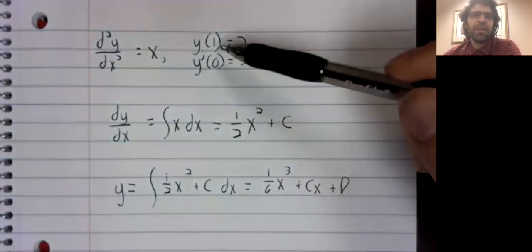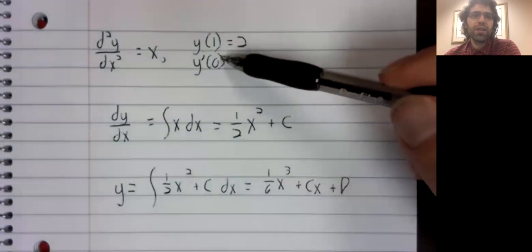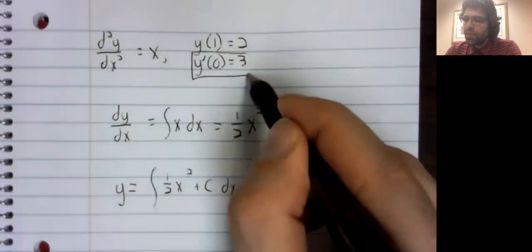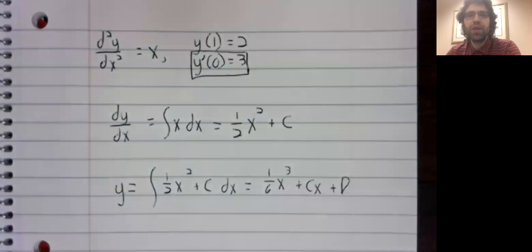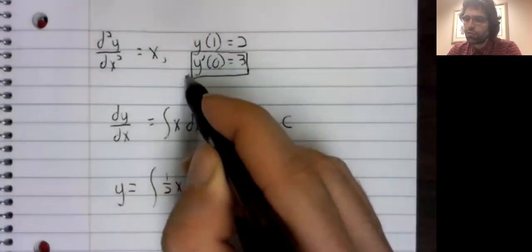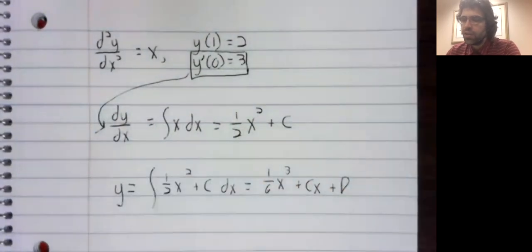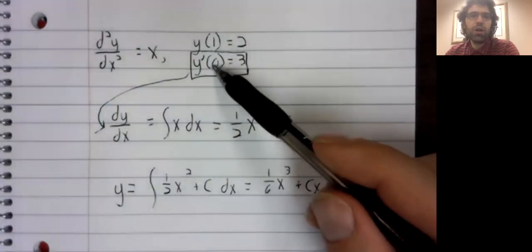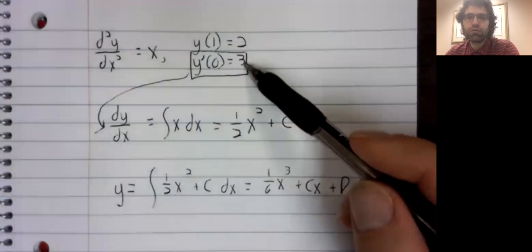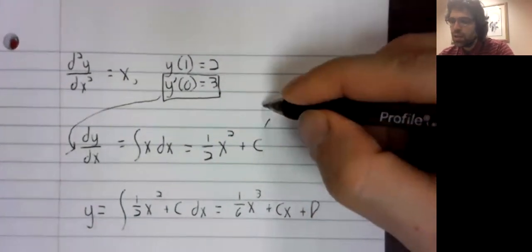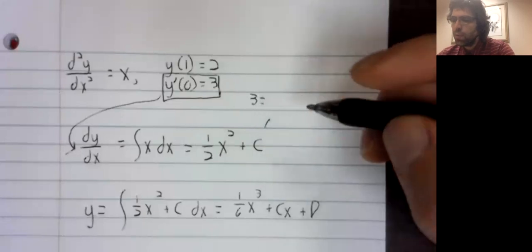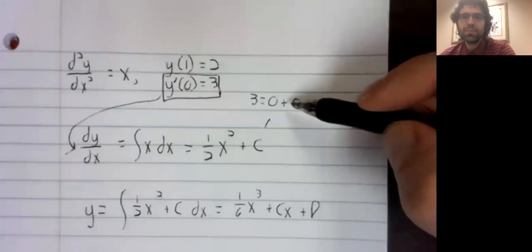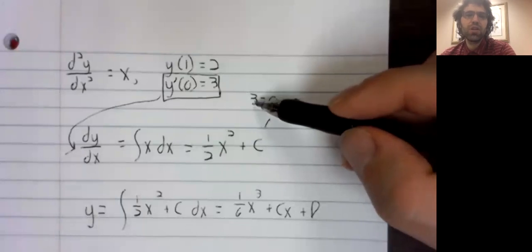And that's why we need two initial conditions. So we will use the initial condition y prime of 0 equals 3 to find c. When x equals 0, the derivative is 3. 3 equals 0 plus c. So c equals 3.